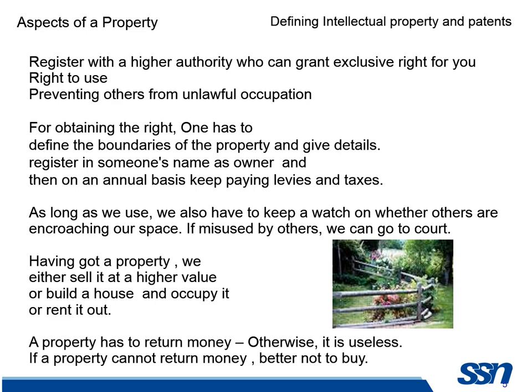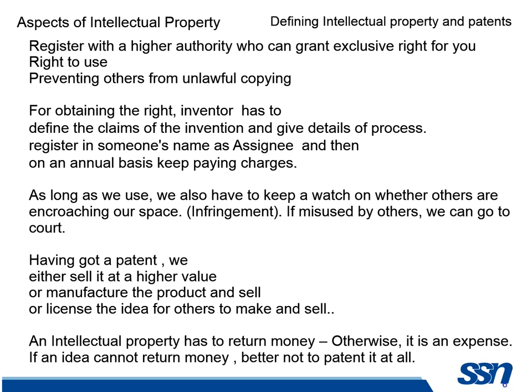Now apply the same logic and you'll understand IPR. In intellectual property also, we have to register with a higher authority who gives us exclusive right to use and the right to prevent others from unlawful copying. In order to obtain the right, we have to give what we are claiming — that's called a claim of the invention — and give the details of the process. We register it in somebody's name as assignee and on an annual basis keep paying charges. We also have to watch whether others are copying our idea, which is called infringement in IPR. If misuse by others, we can go to court. Just like a property, having got a patent, we either sell it at a higher value, manufacture the product and sell, or license the idea for others to make and sell. An intellectual property has to return money, otherwise it's an expense.